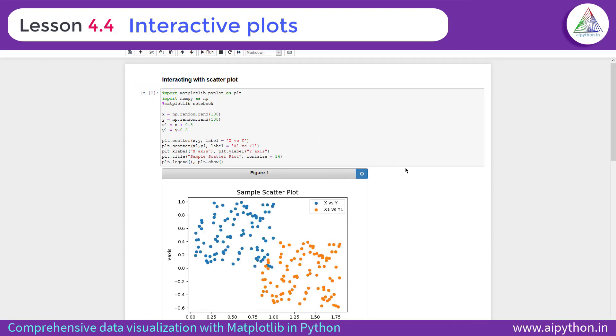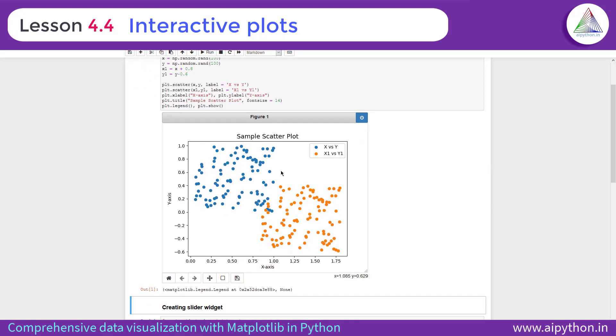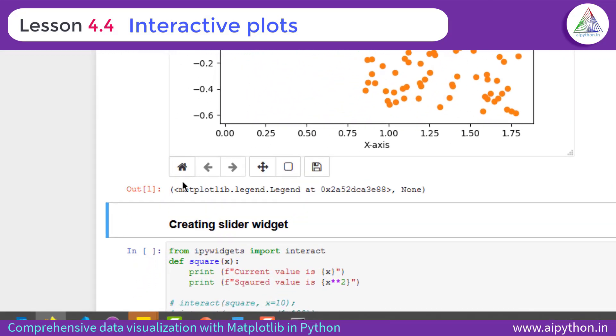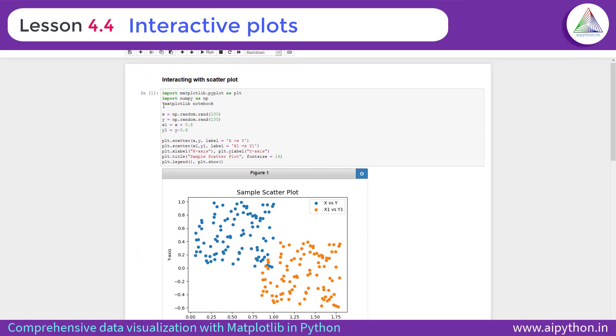So when you execute this graph, you'll get the similar image or rather the plot which you have seen earlier. But if you pay attention closely at the bottom of this graph, there are some controllers or you can say buttons. These buttons are available because of writing this magic function which is matplotlib notebook.